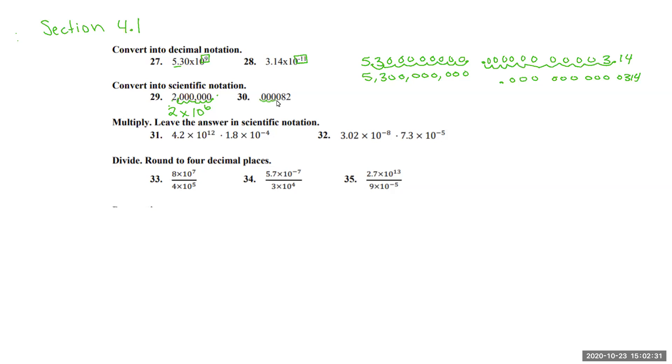And this applies to 30 as well. When we go over 5 places here, we have 8.2 times 10 to the negative 5 because it was a decimal to start out with.